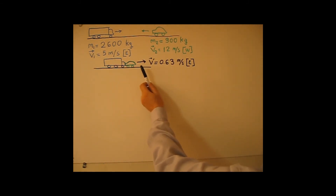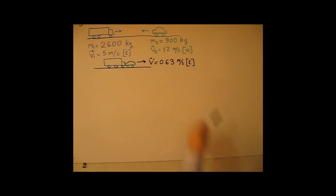After the truck and car collide, the wreck will move towards the east with this velocity of 0.63 m/s.